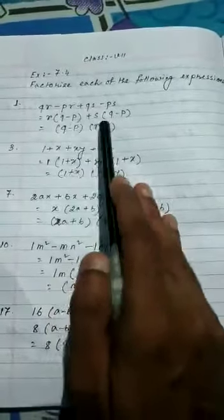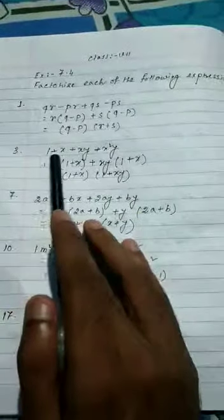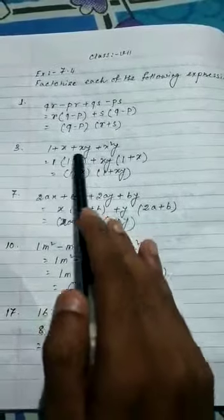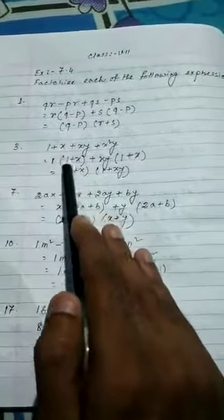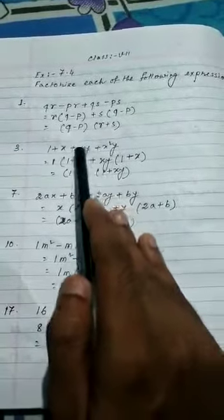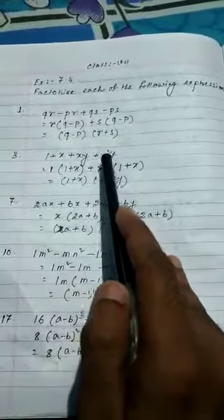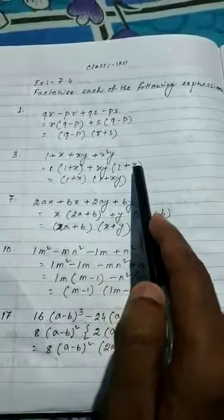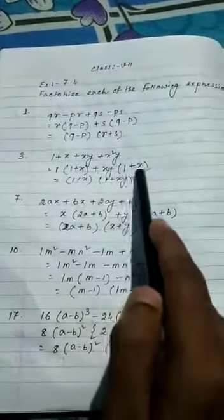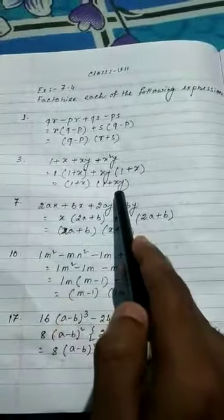Next problem: 1 plus X plus XY plus X squared Y. We can take common 1 here. If you take common 1, so 1 into 1 is 1 and 1 into X is X. No change there. From this expression we can take common XY also. So XY common. From there XY gone means 1, XY from X squared Y means X. Now what we can take common? 1 plus X. So 1 plus X on this side, 1 plus XY on the other.